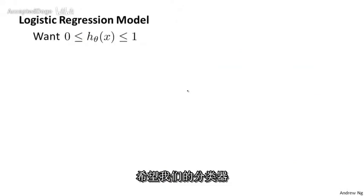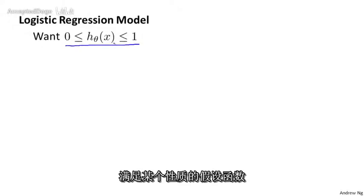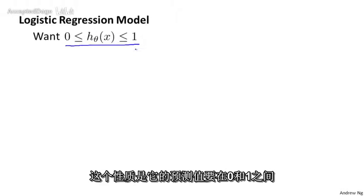Earlier we said that we would like our classifier to output values that are between 0 and 1. So we'd like to come up with a hypothesis that satisfies this property, that is predictions are between 0 and 1.